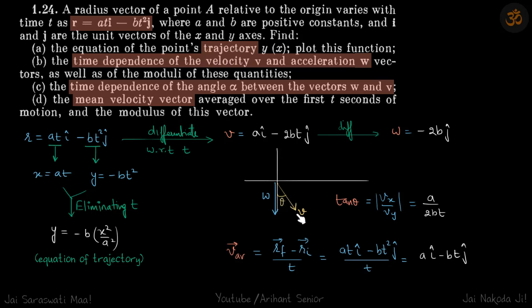So theta angle we can directly say is the x component of velocity divided by y component of velocity, modulus of that. That is tan theta. So that will be a upon 2bt. This is the answer of second part.